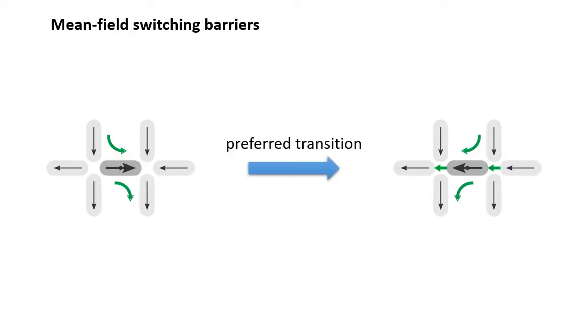In the case of artificial square ice, each nanomagnet is surrounded by six other nanomagnets. These can have different moment orientations, leading to 64 possible environment states. Each configuration of such a small-scale motif has a different energy, where head-to-tail moment arrangements are favored, as shown in green.